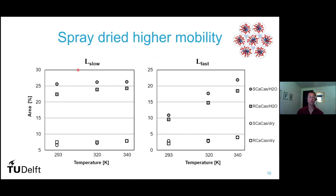Then we see that for the slow movements, you get a bigger amplitude for the spray-dried ones than for the roller-dried ones. For the dry material, the movement is much less. You see the same effect for the fast movement.